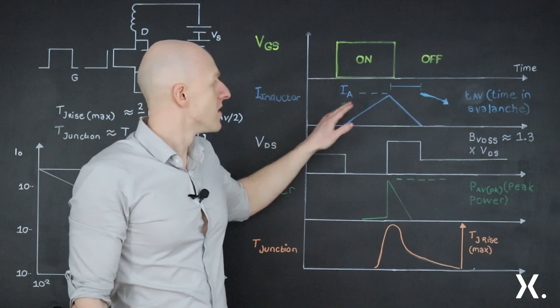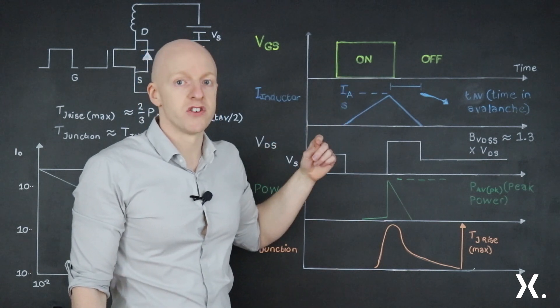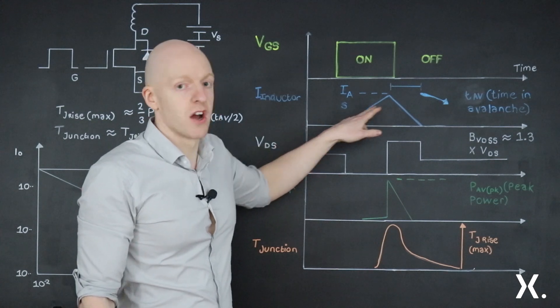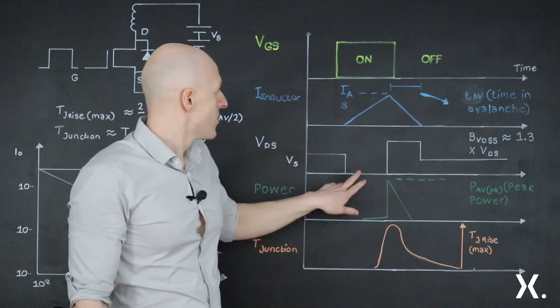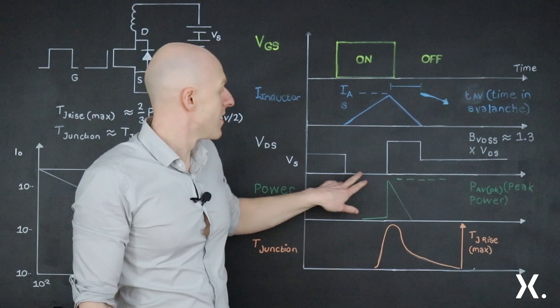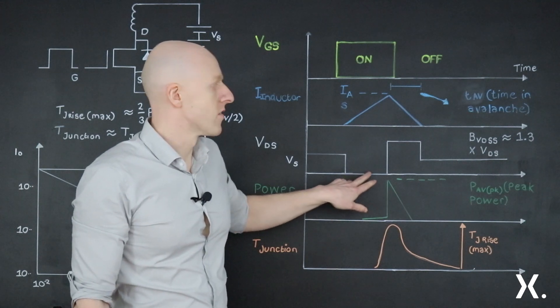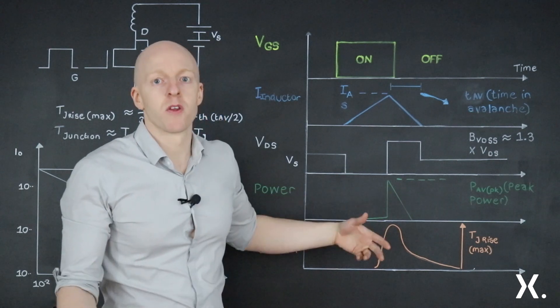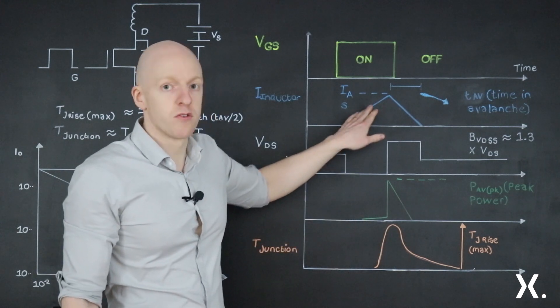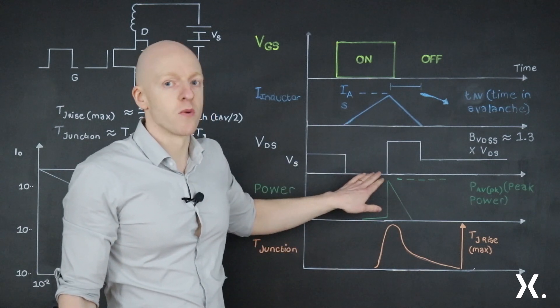During the on period, the current can flow through the channel of the MOSFET and the current in the inductor can charge up. During this time here, we can barely see, but there is a very low VDS across the MOSFET. And that's because when the MOSFET is on, it has a very low resistance. So even though there's current flowing, there's only a small amount of voltage.